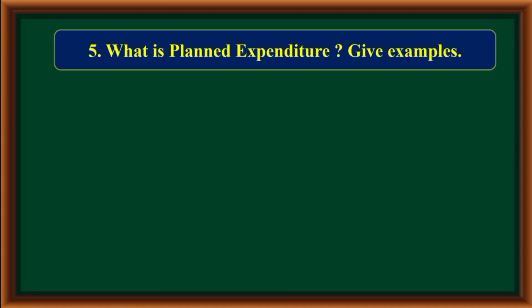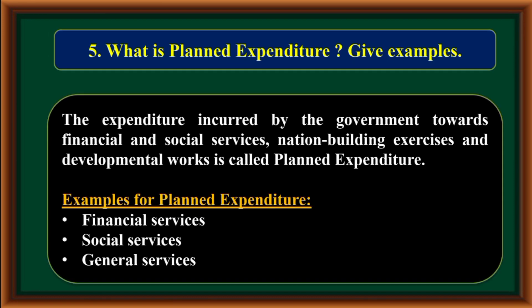What is planned expenditure? Give examples. The expenditure incurred by the government towards financial and social services, nation building exercises, and developmental works is called planned expenditure. Examples for planned expenditure: financial services, social services, general services.